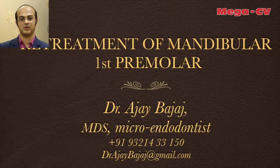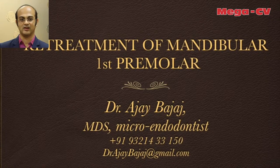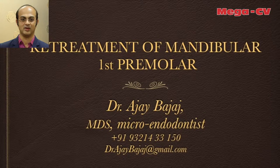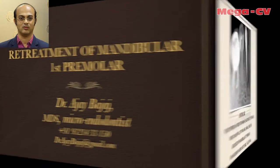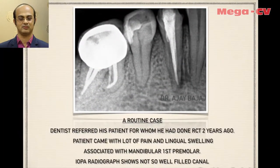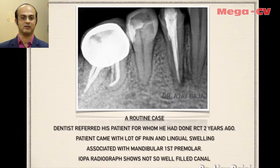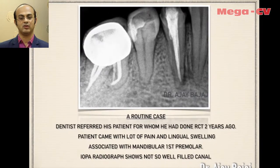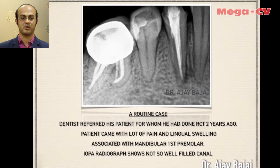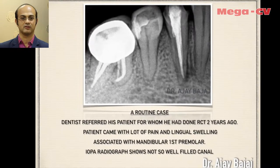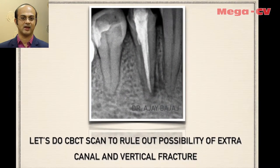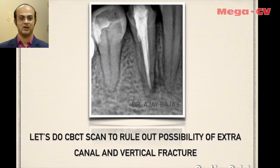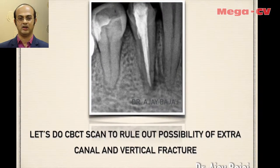The first video is a retreatment of a mandibular first premolar — a simple but instructive case. A dentist friend referred this patient to me. The patient had a root canal done two years ago, but it was not a great root canal. The patient had pain, and we suspected a periapical lesion, possibly a vertical fracture. We decided to take a CBCT scan, which clearly showed the canal had been filled but not densely packed.